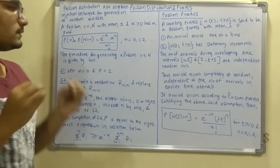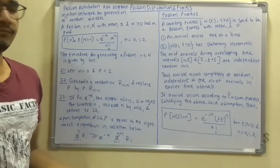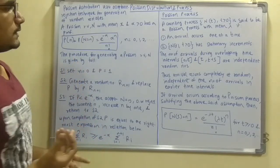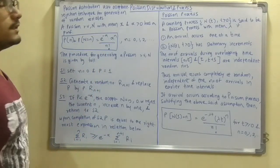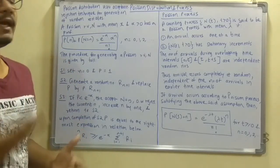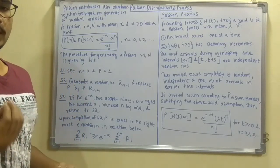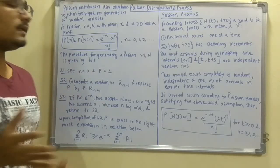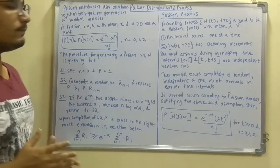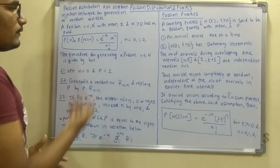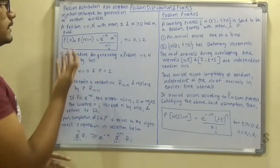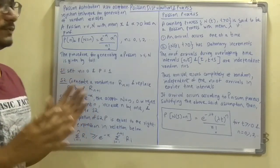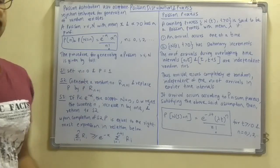For generating this distribution, you have a Poisson random variable — say capital N with mean x and alpha greater than 0 — and it has a Probability Mass Function (PMF). According to the Poisson distribution, we define: P(n) = P(N = n) = e^(−α) · α^n / n!, where n = 0, 1, 2, 3, ... up to infinity. This is the distribution equation used to solve Poisson process problems.